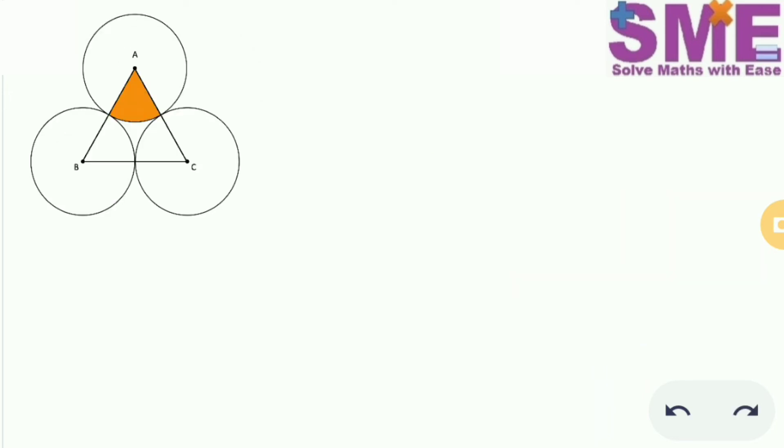Now we will find the area of this sector, this shaded region. So the area of the sector of a circle, the formula is given as angle of sector divided by 360 degrees into π r squared.